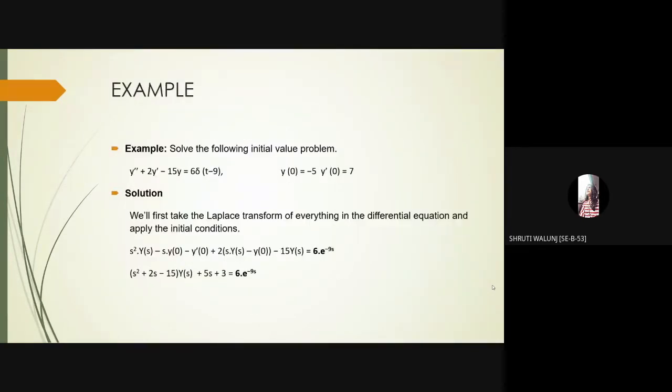This is an example of Dirac delta function: y double dash plus 2y dash minus 15y is equal to 6 delta of t minus 9, given that y of 0 is equal to minus 5 and y dash of 0 is equal to 7.